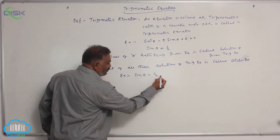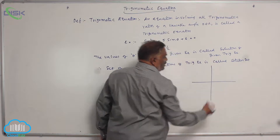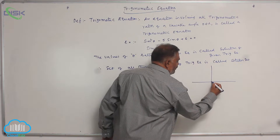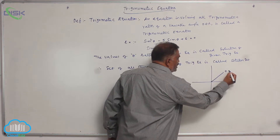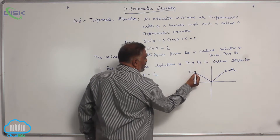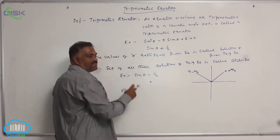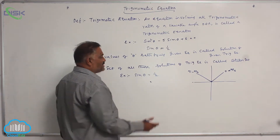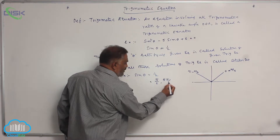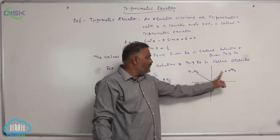For example, take sine theta equals 1/2. Using the coordinate axis with the first and second quadrants, sine theta is always positive. So the values satisfying this are pi by 6 (in the first quadrant) and pi minus pi by 6, which is 5 pi by 6 (in the second quadrant), since sine theta is positive only in those quadrants.